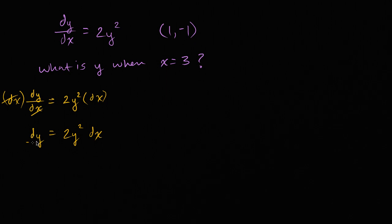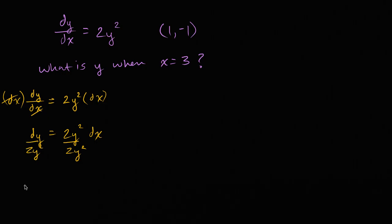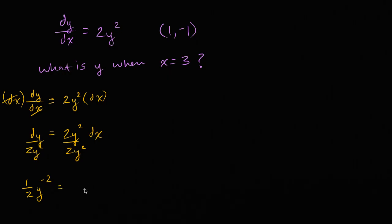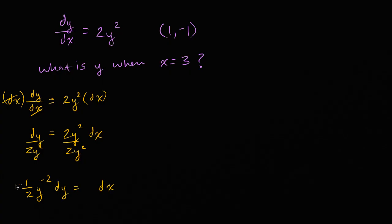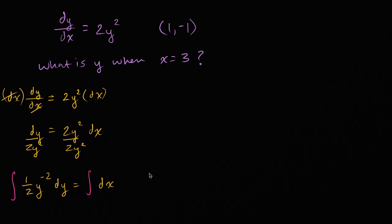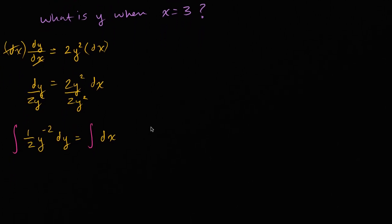If we divide both sides by two y squared, the left-hand side we can rewrite as one-half y to the negative two power, and that is going to be equal to dy, which equals dx. Now we can integrate both sides. Let me get myself a little bit more space.